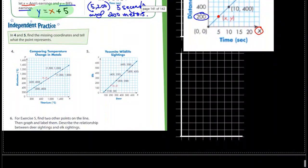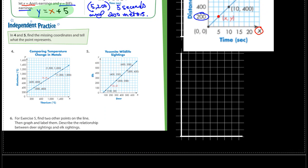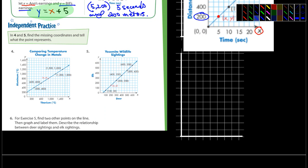You could do the same thing with four and five. I don't think I'm going to bother with that. You should be able to do that. And then for number six it says for exercise five, find two other points on the line then graph and label them, describe the relationship between deer sightings and elk sightings. So they're obviously talking about this one right there.